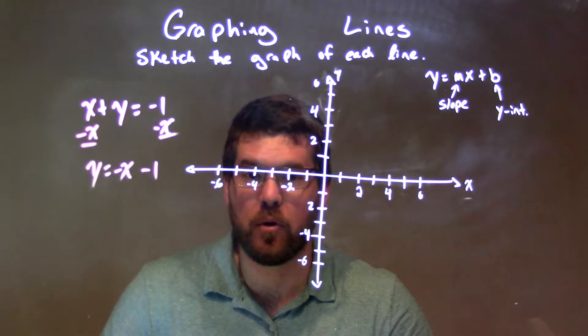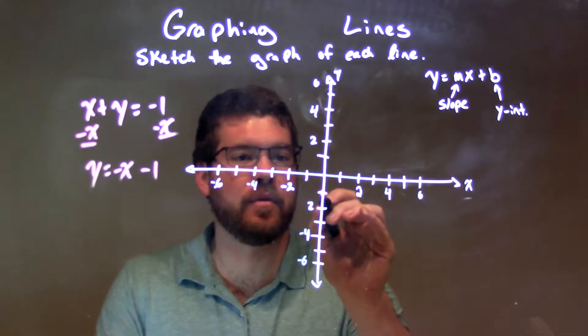Fairly simple, so let's go graph it now. Negative 1's our y-intercept, so we have negative 1 right there.